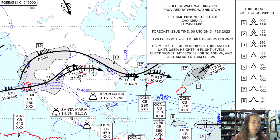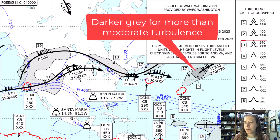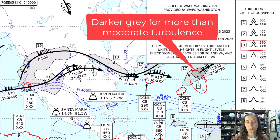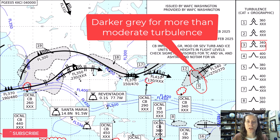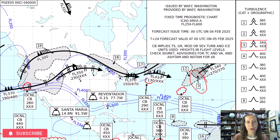One last thing: if an area has more than just moderate turbulence — like area three here — they seem to be coloring those in a slightly darker gradient of gray, which may help you identify areas of greater than moderate turbulence on the chart. Hope this was helpful! Check out my other content and have a fantastic day from Aviation 101 with Flora.